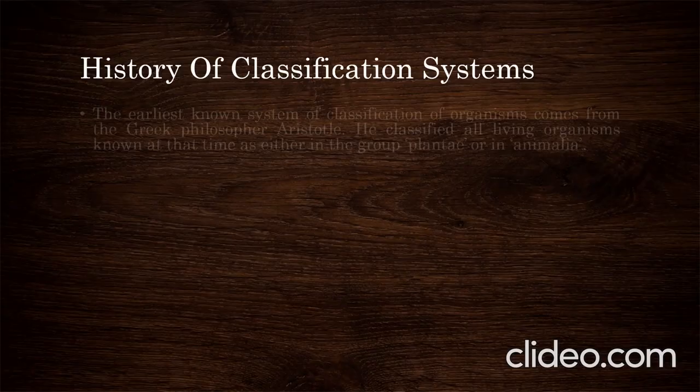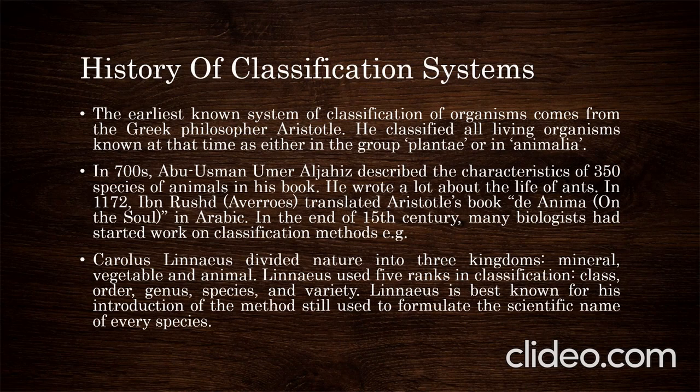History of classification systems: The earliest system of classification comes from the Greek philosopher Aristotle, who classified all living organisms known at that time into either the group Plantae or Animalia. In the 700s, Abu Usman Umar al-Jahiz described the characteristics of 350 species of animals in his book and wrote extensively about the life of ants. In 1172, Ibn Rushd (Averroes) translated Aristotle's books The Animal and The Soul into Arabic.